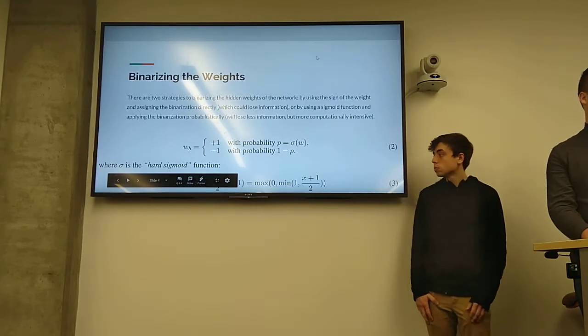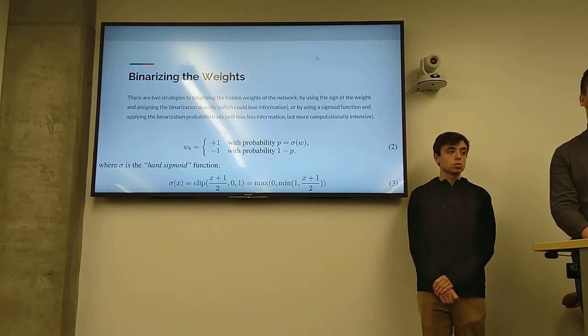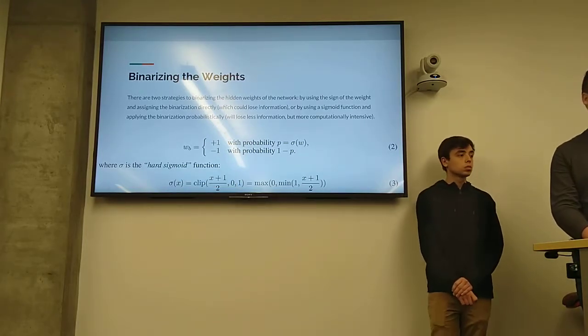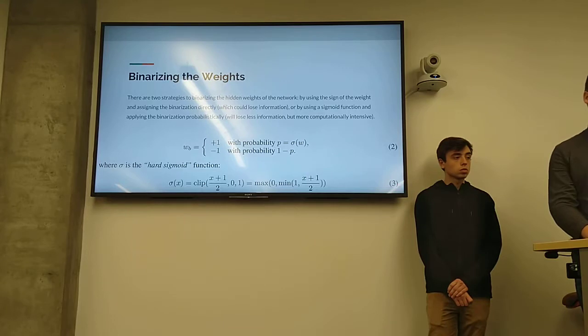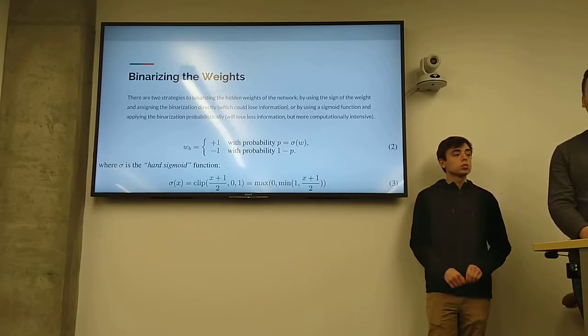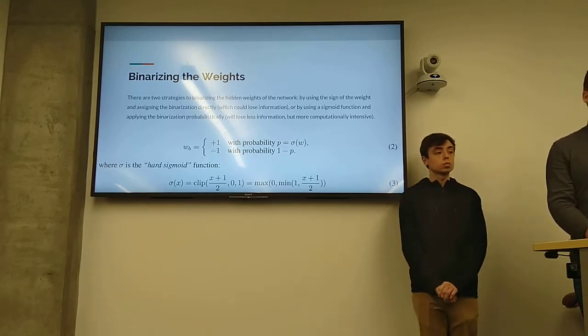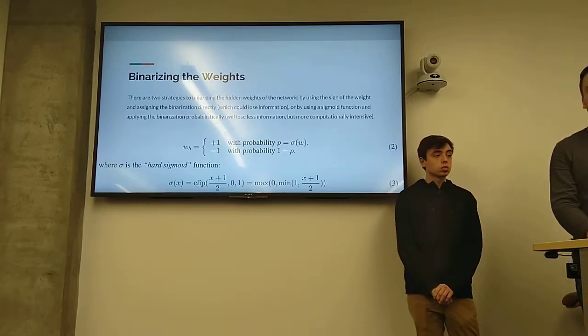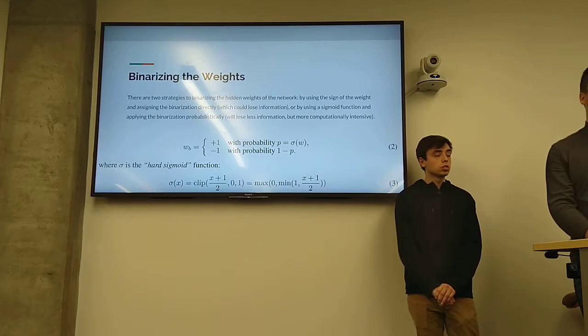There's two methods to binarizing the weights suggested in the paper that we use as a reference. We could use the sign of the original weight, so if it's positive or zero, we could assign the weight a positive one, or if the original weight was negative, we would assign it a binarized weight of negative one.